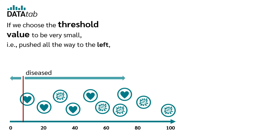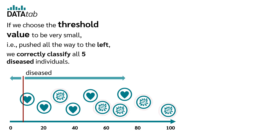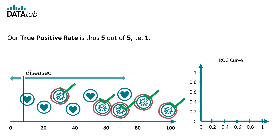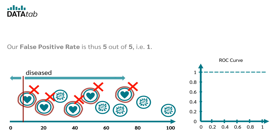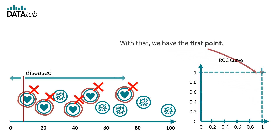If we choose the threshold value to be very small, pushed all the way to the left, we correctly classify all 5 diseased individuals. Our true positive rate is thus 5 out of 5, i.e. 1. In the same way, however, we also misclassify all 5 healthy people as diseased. Our false positive rate is thus 5 out of 5, i.e. 1. With that we have the first point.